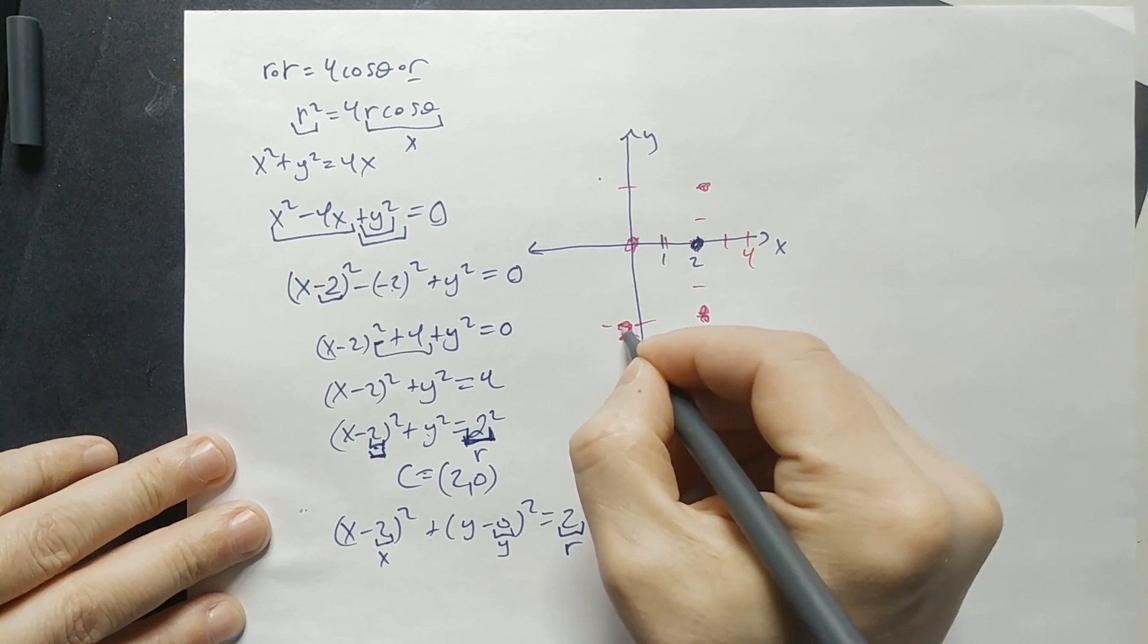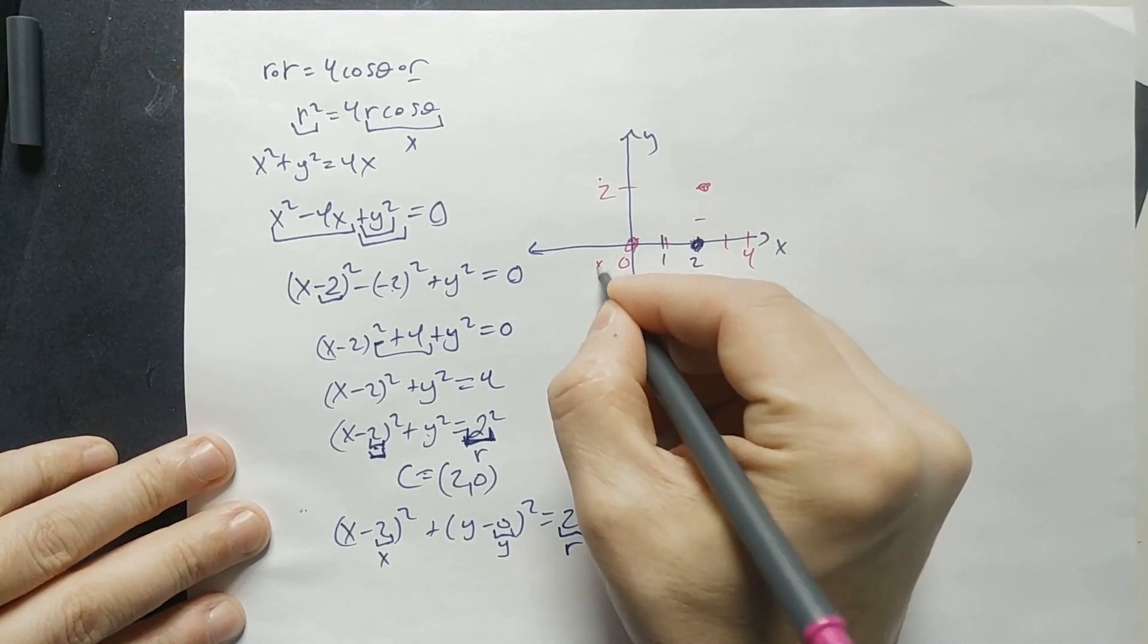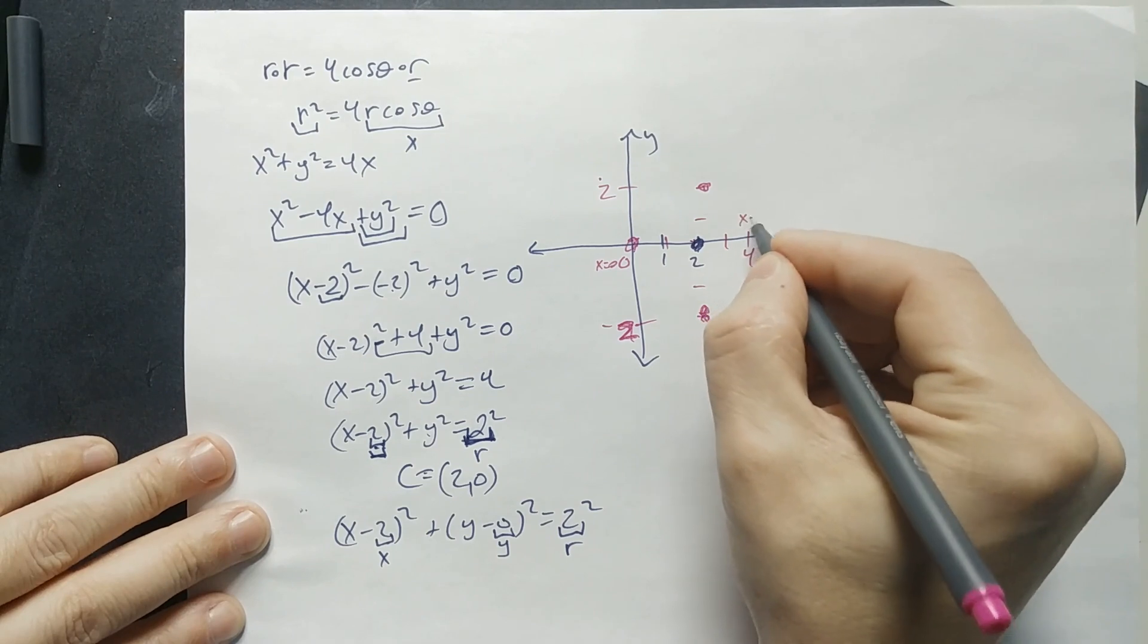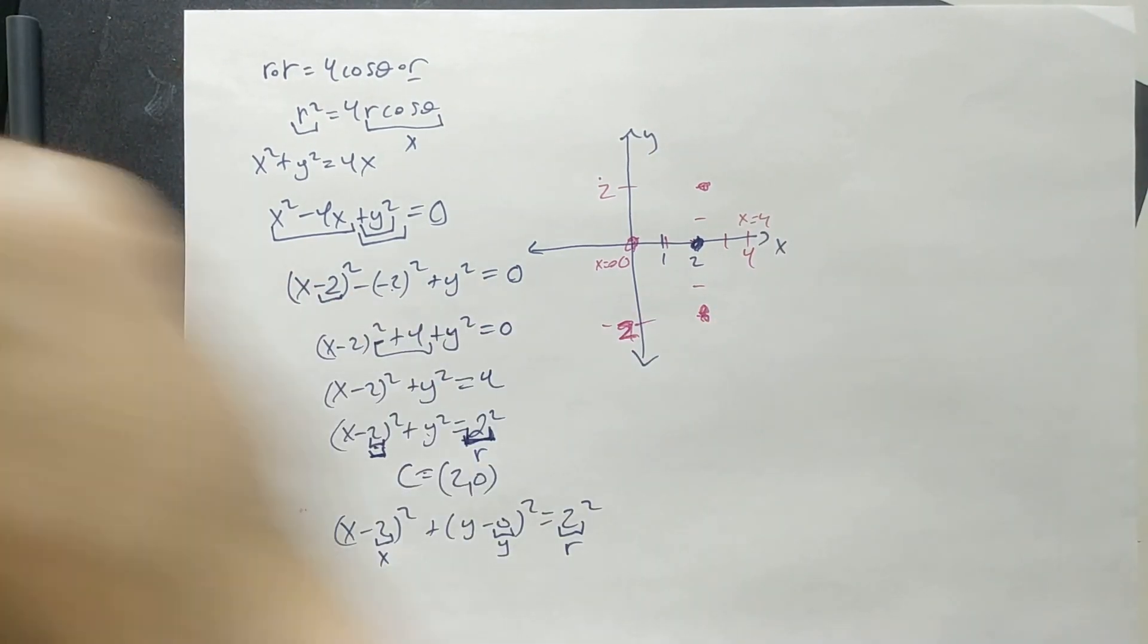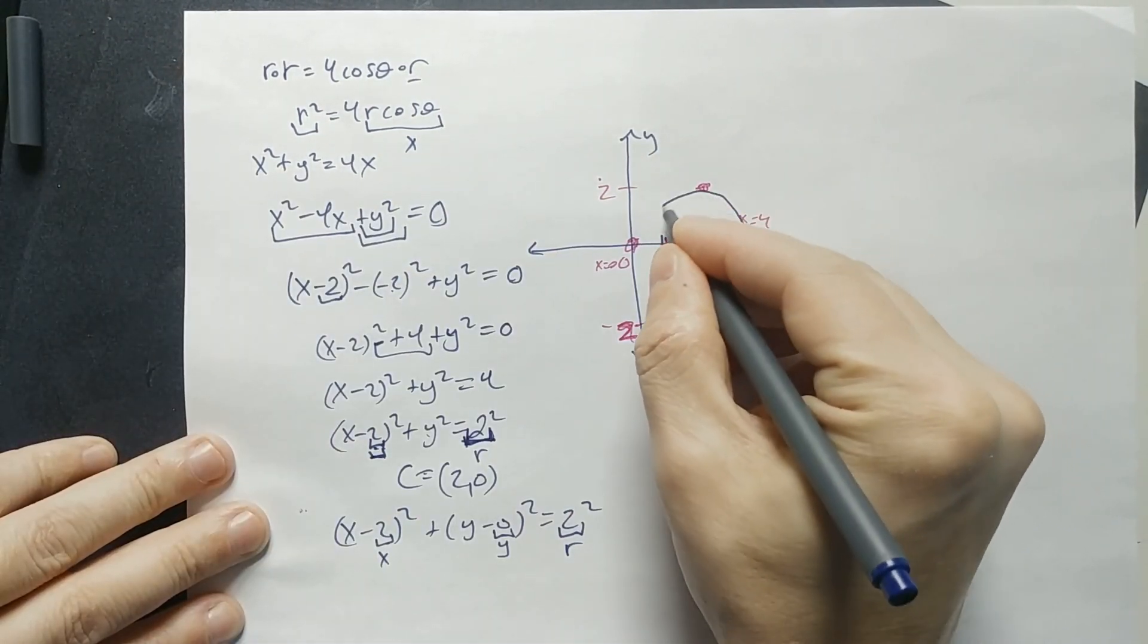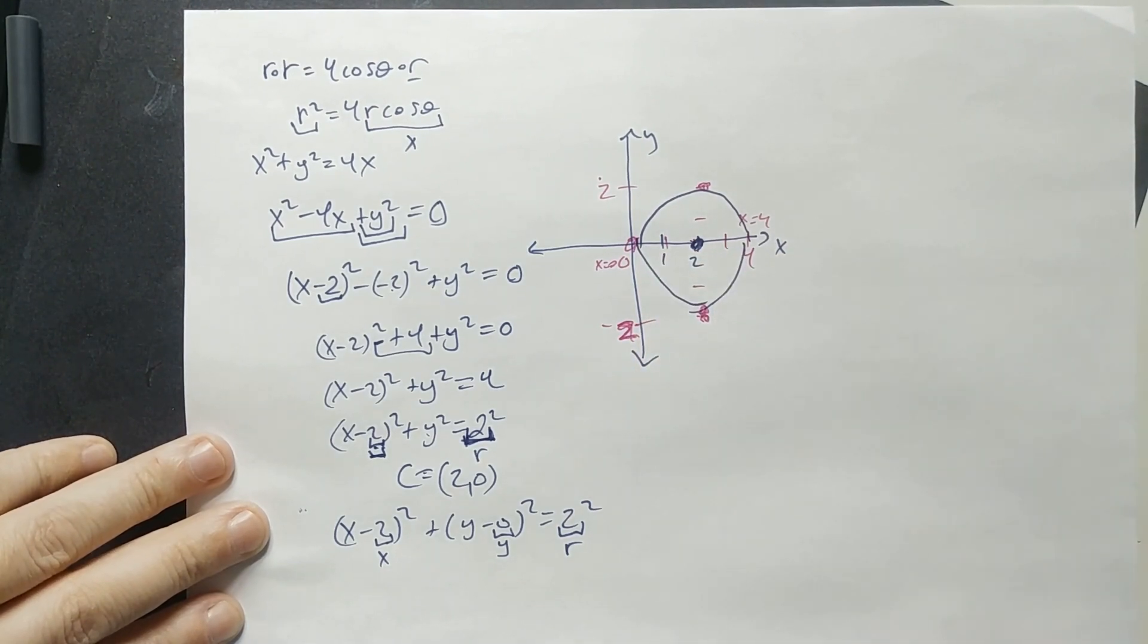So this here would be negative 2. That would be positive 2, right? This is x equals 0 right here. And this is x equals positive 4. And then just connect these pretty much with like a circle to the best of your ability, gets the idea across.